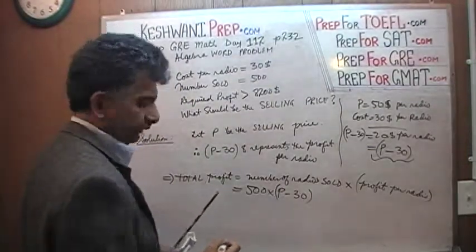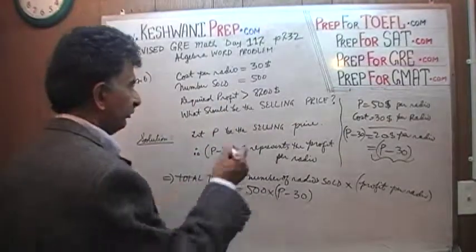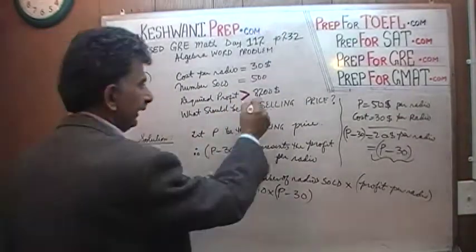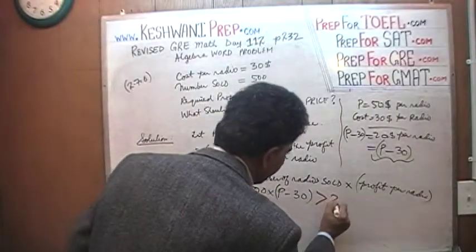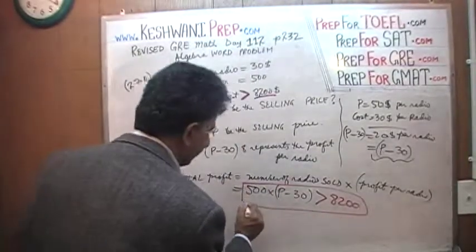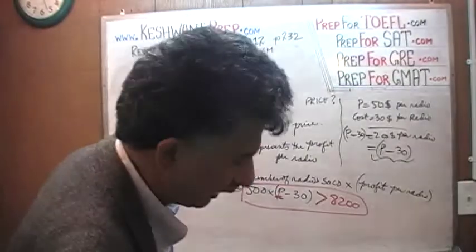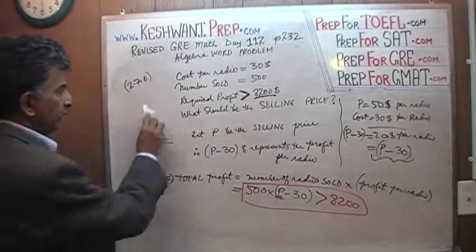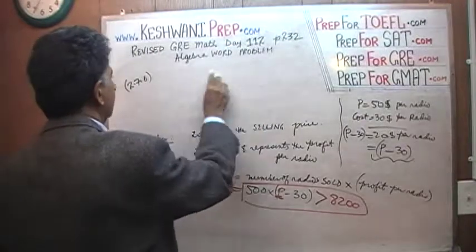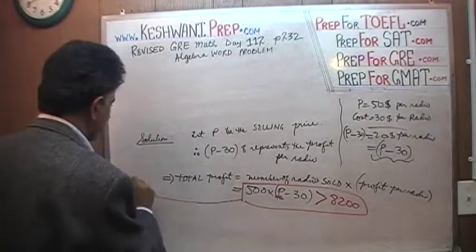This amount — the total profit — the manufacturer wants to make sure that he sells at a price where it generates a profit of more than $8,200. This profit has to be more than $8,200. We have to solve this inequality for P. That's all it is. We're going to do that at the top of the blackboard — I need the room, so we're going to erase all of this now.